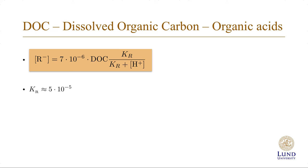So with these equations, and the knowledge that the value of the equilibrium constant is about 5 times 10 to the minus 5, which is close to the value for acetic acid, we can look at the fraction of carboxyl groups protolyzed.